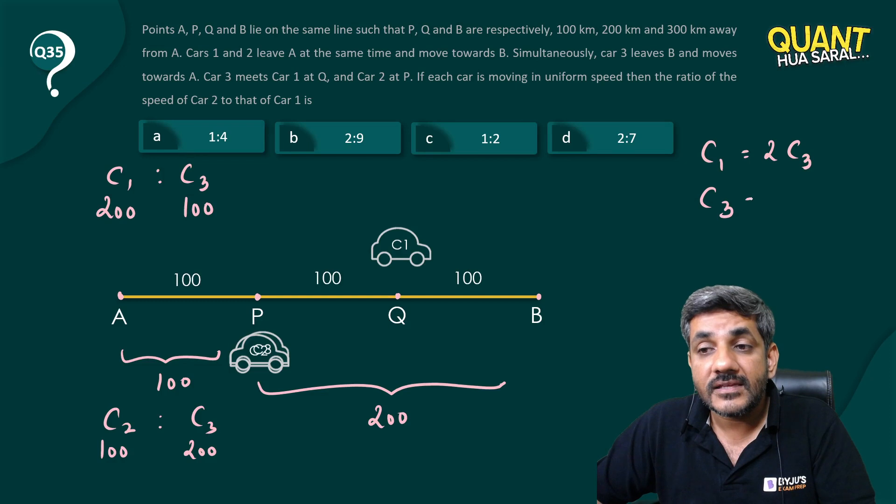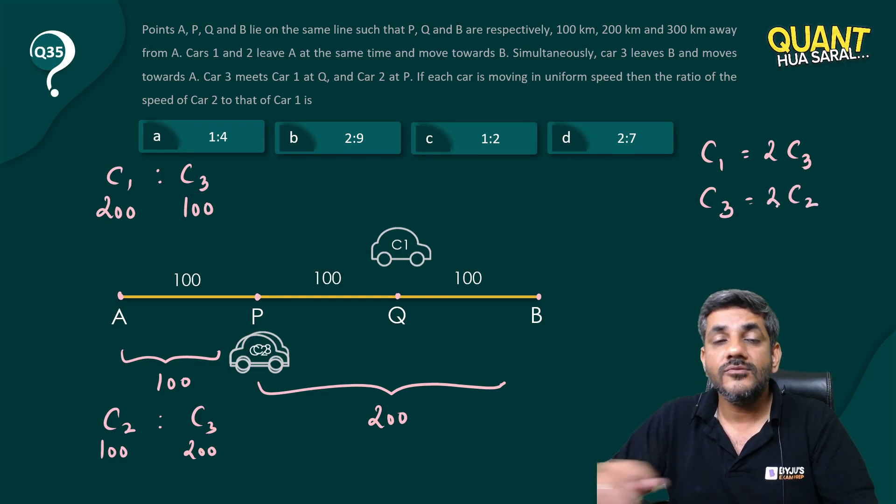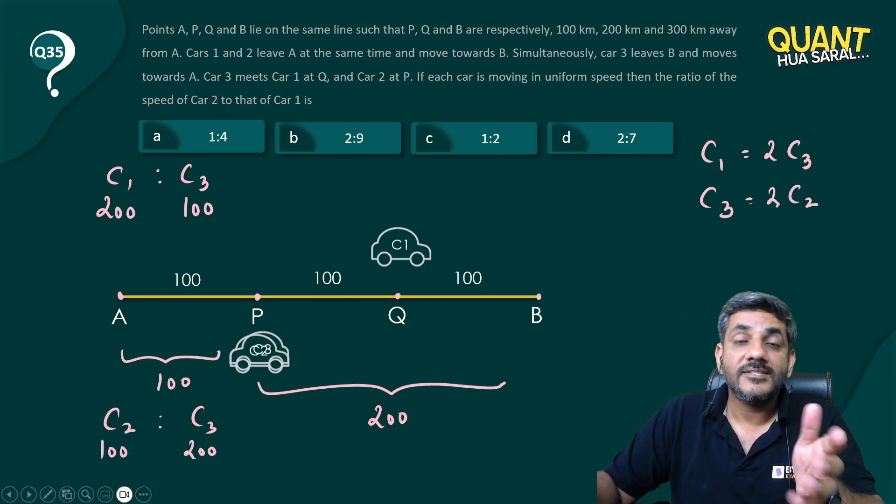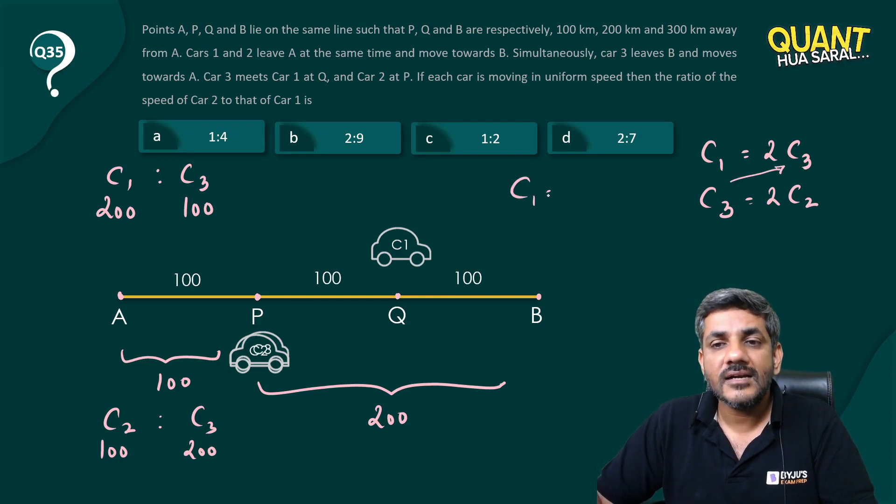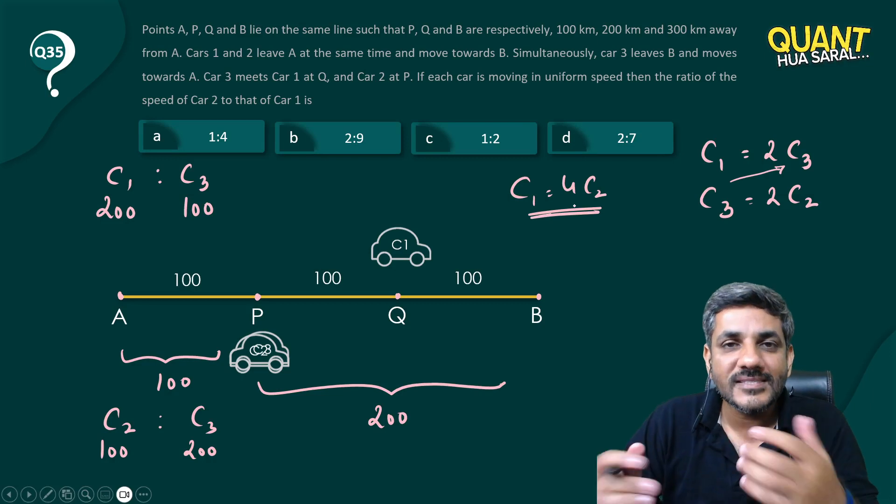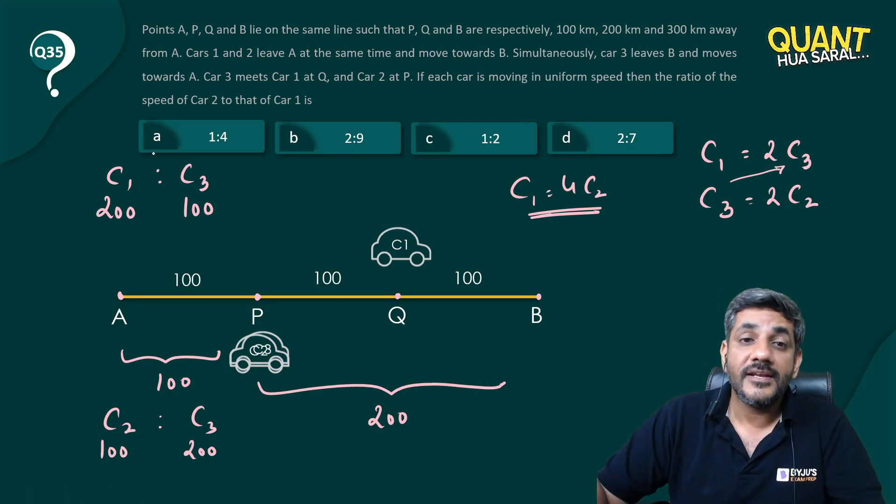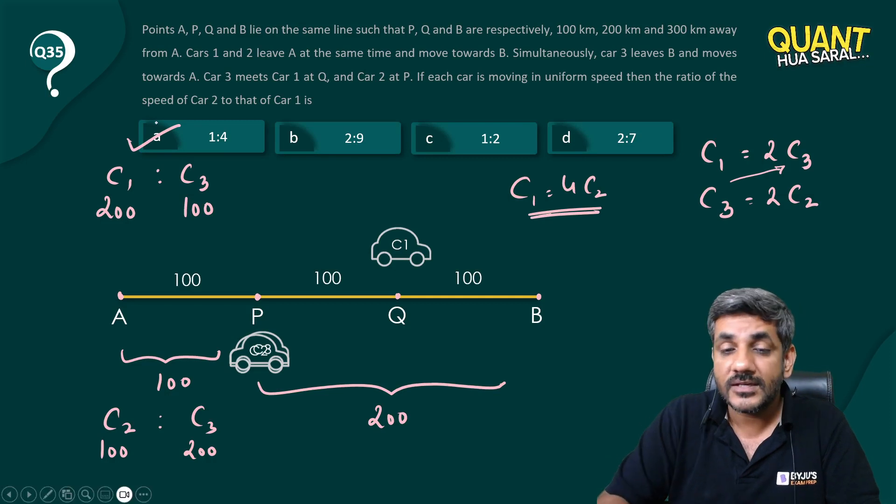Now C3 is twice of C2, and twice of C3 is C1, so four times of C2 is C1. That's what the question is asking us - what is the ratio of their speeds? One speed is four times the other, so the ratio is 1:4, and that's how I get the answer to this question in an aptitude way.